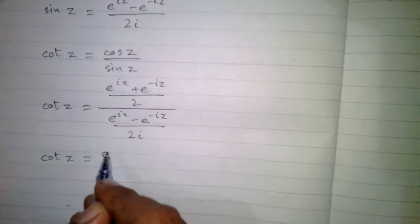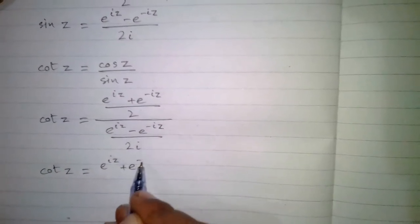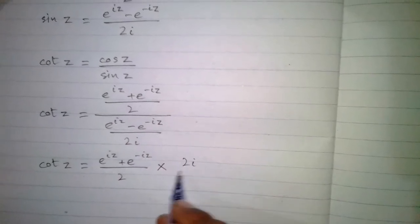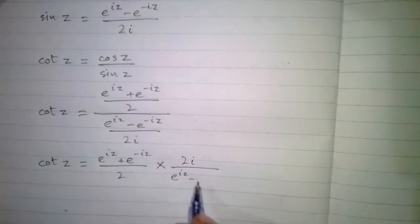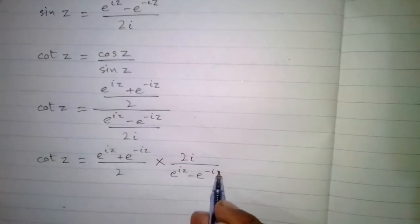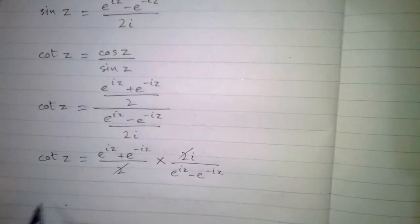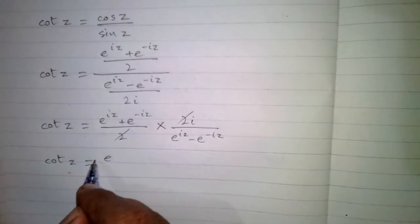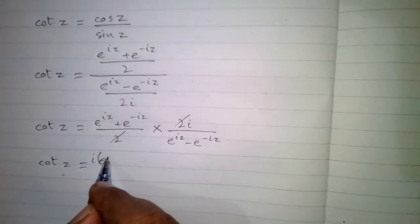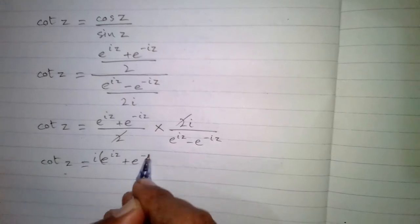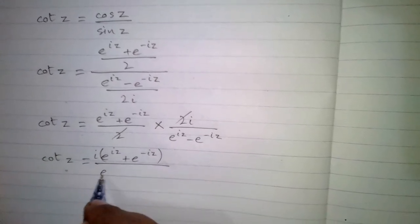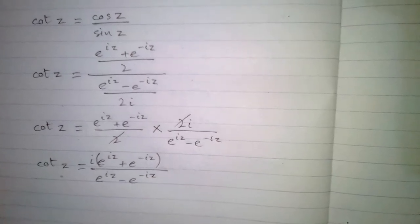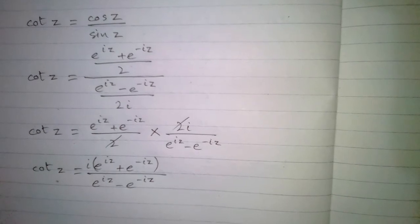Cotangent of z is equal to e to the power iota z plus e to the power minus iota z, multiplied by 2 iota over e to the power iota z minus e to the power minus iota z. This simplifies to iota times e to the power iota z plus e to the power minus iota z, upon e to the power iota z minus e to the power minus iota z. So this is the cotangent of a complex number.